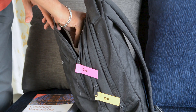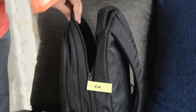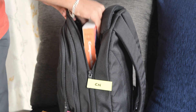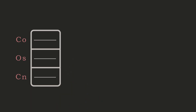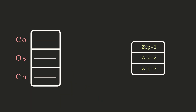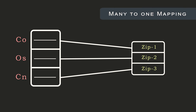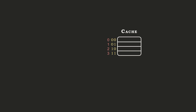Similarly, if you pick up the CN book, you place it in zip 3. The placement of the book is determined by its label. Any CO book goes only in zip 1, OS in zip 2, and CN in zip 3. In terms of functions, direct mapping can be thought of as a many-to-one mapping.